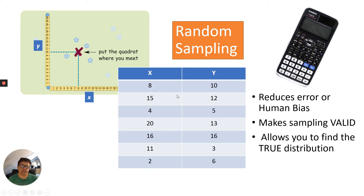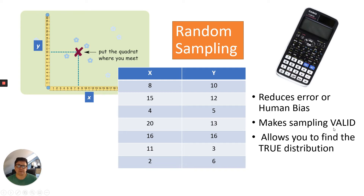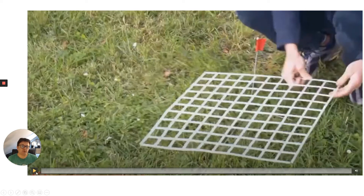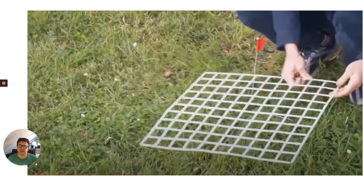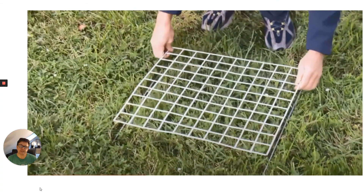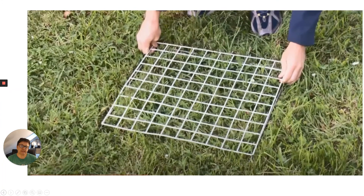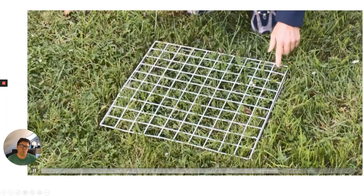Why random? Because it reduces error and human bias. If you just placed the quadrat wherever you wanted, you might pick areas with high numbers of daisies, or none at all if you're feeling lazy. Random placement makes sampling valid and allows you to find the true distribution. You place the quadrat on the randomly chosen area — in this example, there is one daisy.